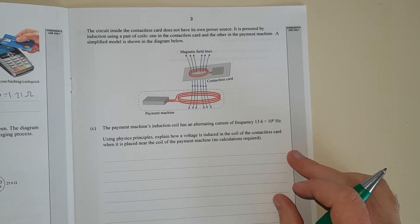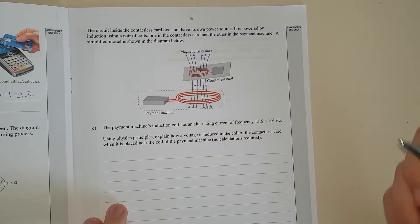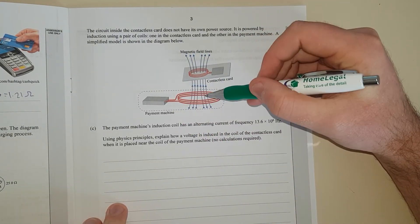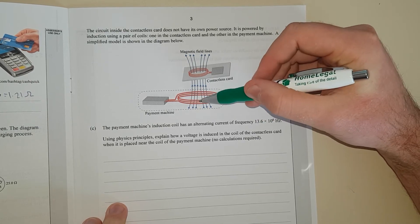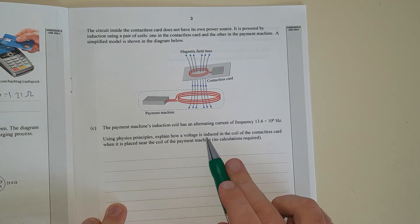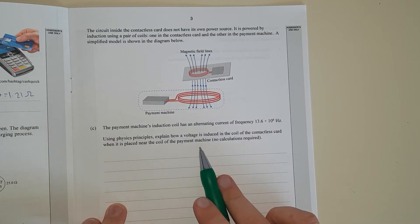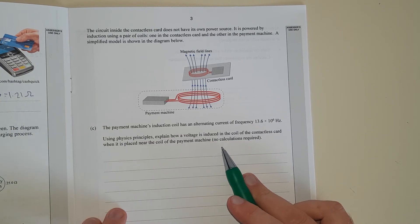The circuit inside the contactless card does not have its own power source. It's powered by induction using a pair of coils. Simplified model. So we've got induction there. There's the magnetic field running through. There's one coil. There's another coil. Using physics principles, explain how voltage is induced in the coil of the contactless card when it's placed near the coil of the payment machine. So I'll just pause and explain.